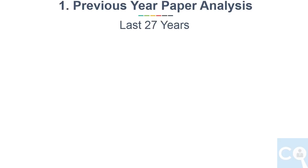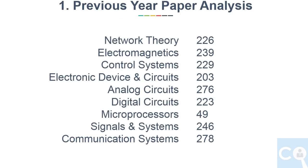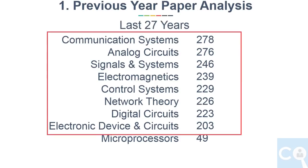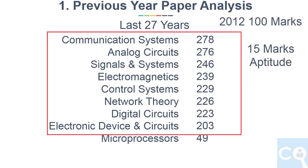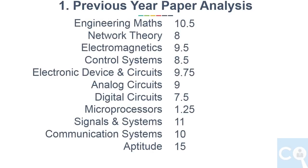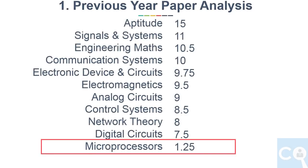From analyzing last 27 years of questions from the Made Easy previous year paper book, if you see the distribution of total questions asked in GATE so far for each subject excluding maths and aptitude, and arrange them from highest to lowest, except microprocessors, every subject has almost equal weightage. These are from last 27 years, but the last four to five years pattern has changed. From 2012, the paper is 100 marks with 15 marks of aptitude included. From 2014, the paper is online with two to three sets each year. Taking the average marks of each subject from 2014 to 2017, and arranging from highest to lowest, again except microprocessors, every subject has almost equal weightage.